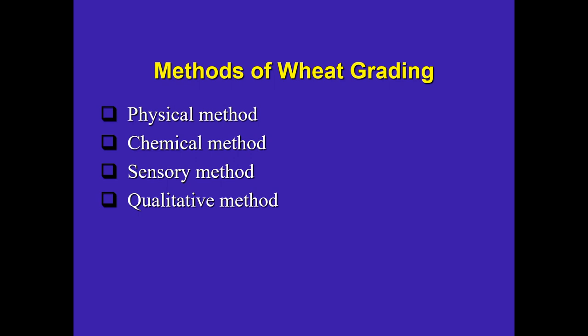The sensory method involves comparing grain colors, similar to the physical method, but additionally includes flavor and taste. These are sensory methods used for grading. The fourth criteria, the qualitative method, tests the quality of a grain against standard reference grains, and on that basis grades are identified — for example, A, B, C, D, or similar classifications.